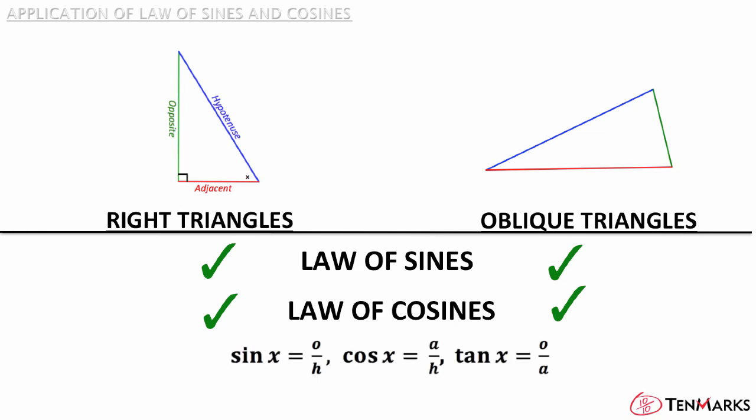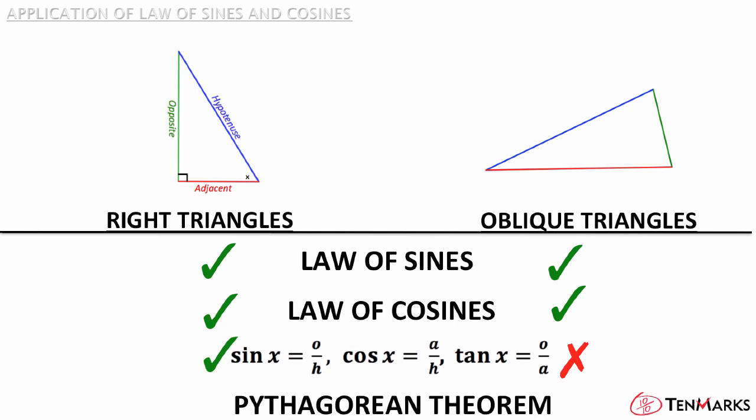What about the sine, cosine, and tangent ratios? Do they work for all triangles? They don't — they only work for right triangles and cannot be used to solve oblique triangles. And remember that the Pythagorean theorem can only be used to find the side lengths of right triangles, but not oblique triangles.